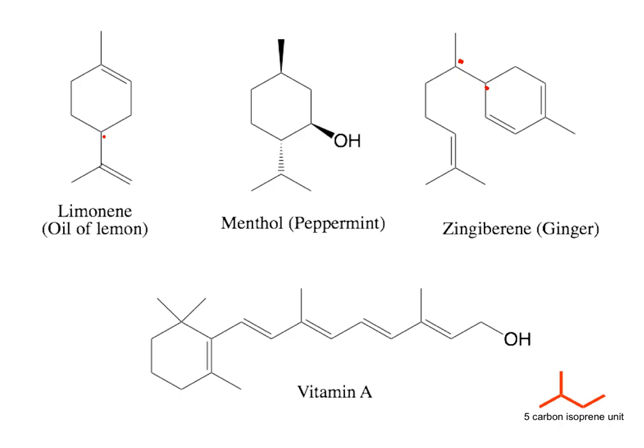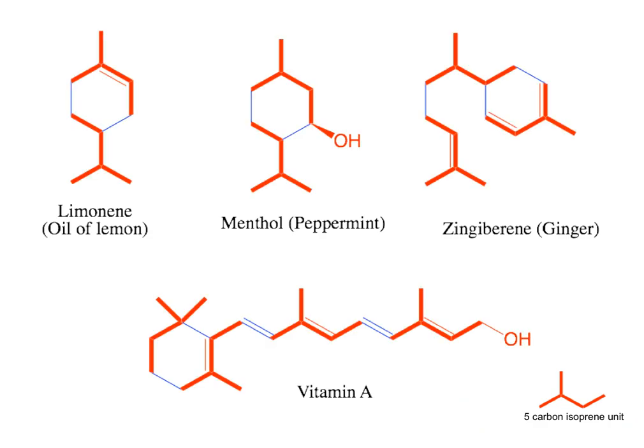What I want you to see is that these structures, although they're relatively complicated, there's actually a pattern, and that pattern for their construction is based on the five-carbon so-called isoprene unit. So what you're going to have to be able to do is look at these complex structures and imagine how the five-carbon isoprene unit can be used to assemble them. On the next slide I'm going to show you the same structures with the isoprene units highlighted in red.